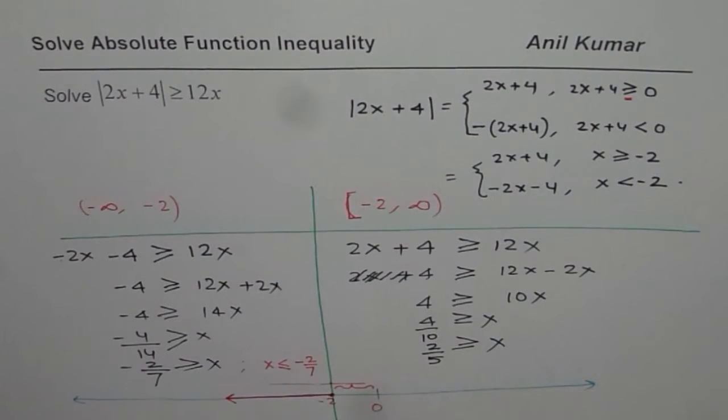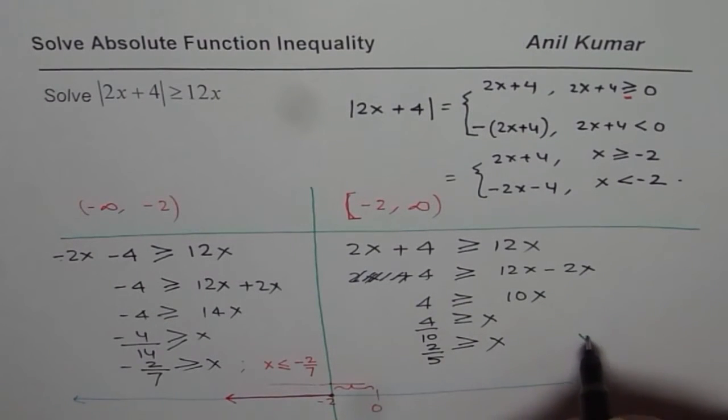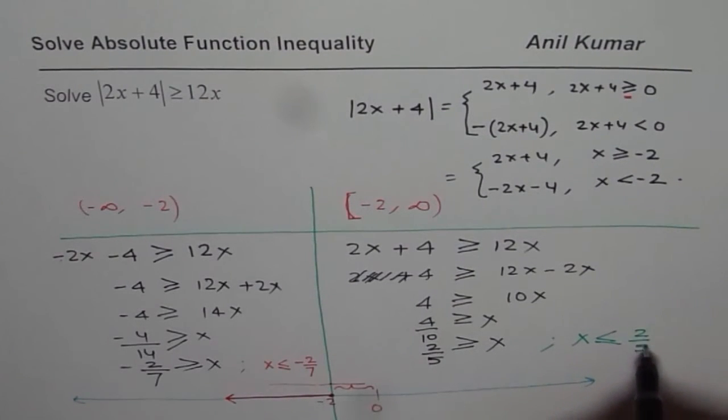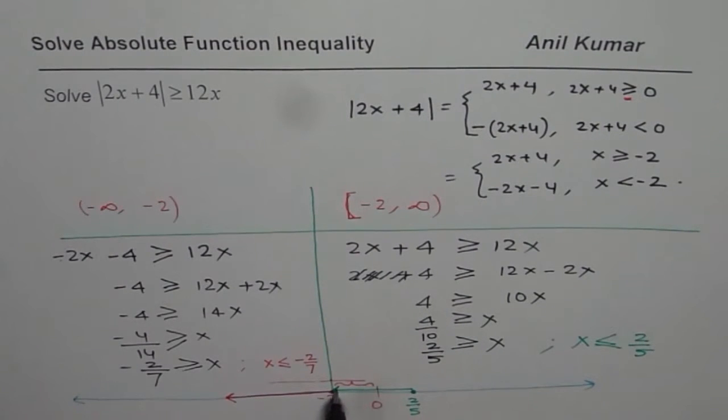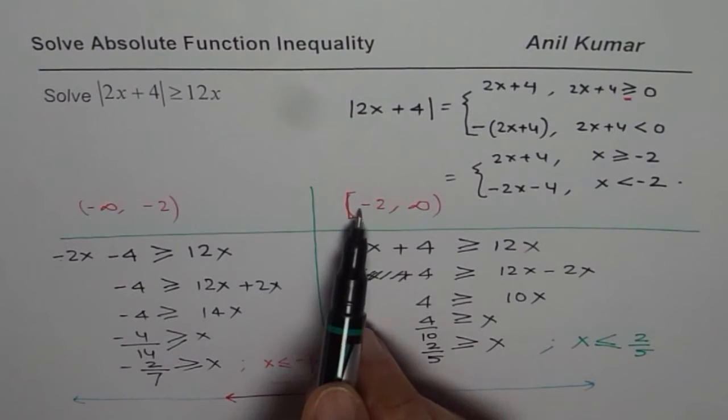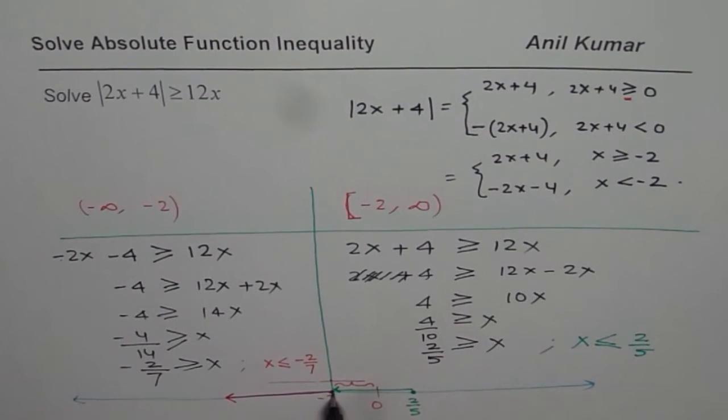So on the right side of minus 2, our solution is that x is less than or equal to 2 over 5. So 2 over 5, let us say this point is 2 over 5 for us. And we are saying on this side. Now this interval is between minus 2 to infinity, so the solution is including minus 2 up to this point. So that is how we get this interval.